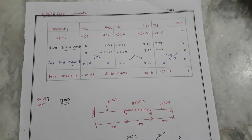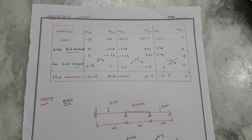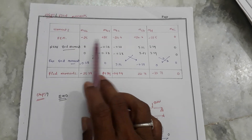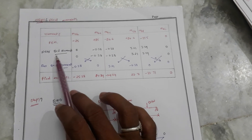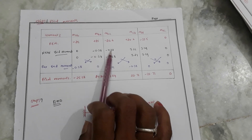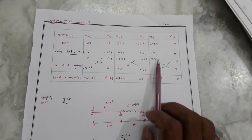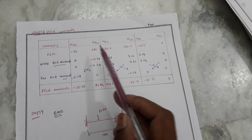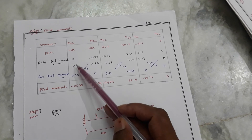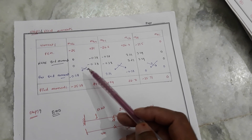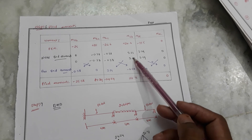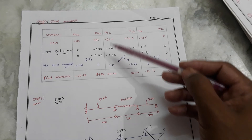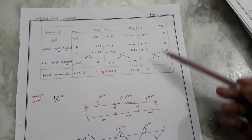This is a very important table. First, we write the moments, then the fixed end moments, then the near end moment and two times the near end moment. The far end moment for the AB member comes from the BA member, and vice versa. Similarly for BC, CD members. Finally, we write the summation of final moments.